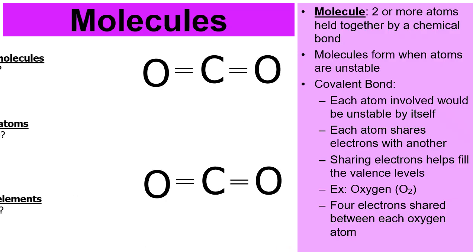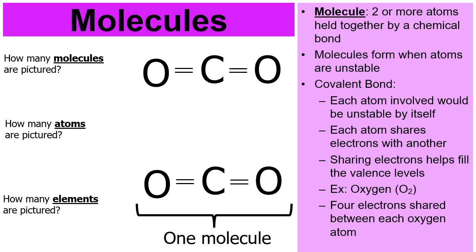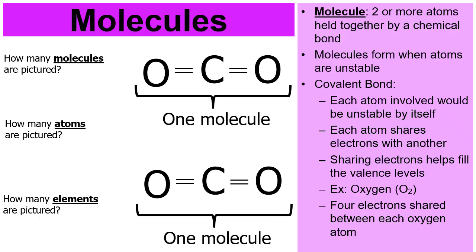Try this picture right here. How many molecules are pictured? That's one molecule on the bottom and one molecule on top — so I hope you said two molecules are pictured. How many atoms are pictured? I hope you said six. The one molecule on top has three atoms plus three atoms on the bottom — three and three equals six.